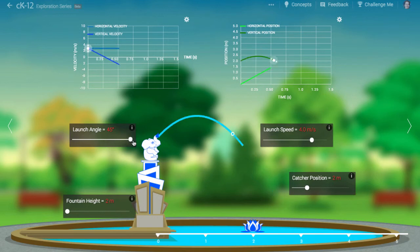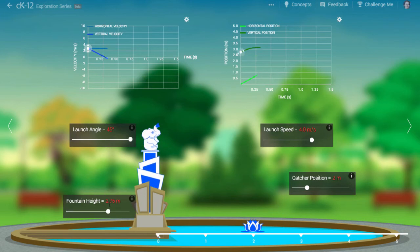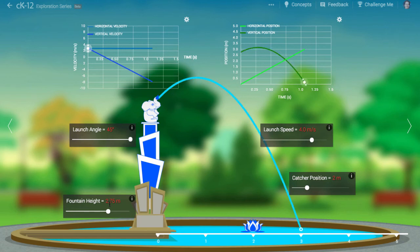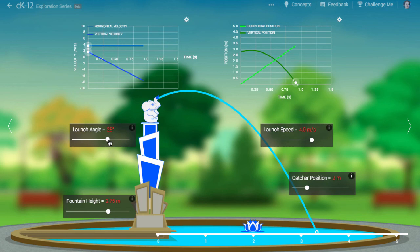An interesting advanced question we can ask is, at what launch angle is the horizontal range the highest? You might guess 45 degrees. And this is true if we launch from the ground. But since the stream's starting height is different from its ending height, the situation is more complex. Play around and see what you can discover.